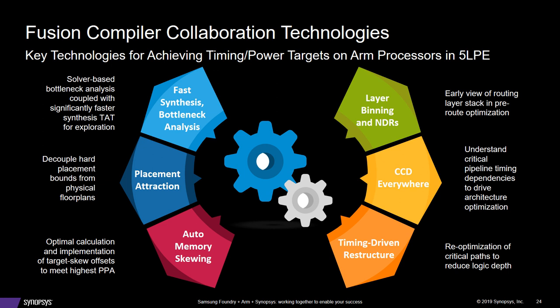Let me start with skewing — useful skew. There are two aspects here. In the bottom, in the pink, is the memory skewing, which I'll cover in more detail. CCD Everywhere in yellow, I'll also cover in more detail. In the darker blue, we have placement attractions — these are floor plan independent, built into the tool into the setHPC options command. Layer binning and NDRs are important for the 13-metal stack.